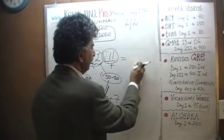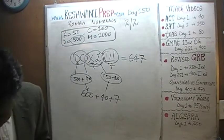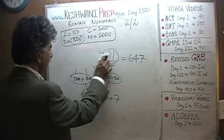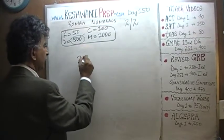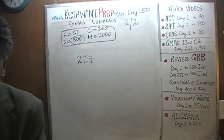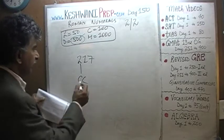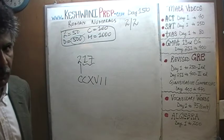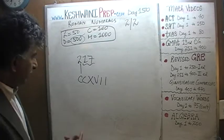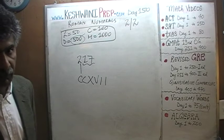Let's do the next one — you do it yourself. 217. Well, 217 is very simple and straightforward. 200 is just CC — that's 100 plus 100. Then 17 is simply 10, 5, 1, and 1. The only way the Romans knew of writing 217 is 100 plus 100 plus 10 plus 5 plus 1 plus 1.